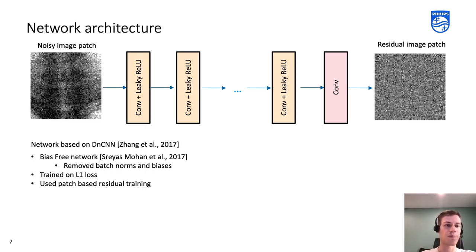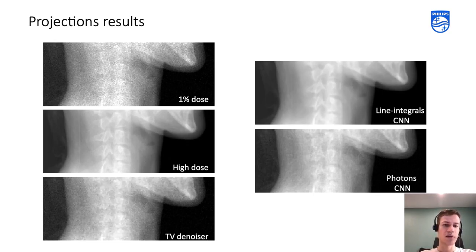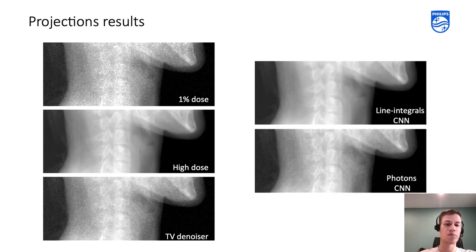As a starting point for our network, we used DnCNN. We changed it a little bit — we removed all biases and batch normalization layers. Therefore, our network became less sensitive to other noise distributions and overall more generalizable. We trained it on L1 loss using patch-based residual training.